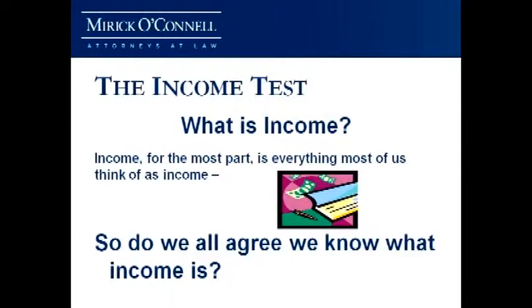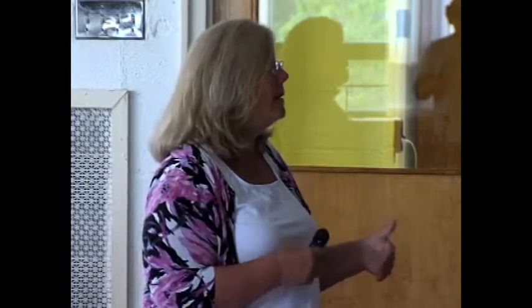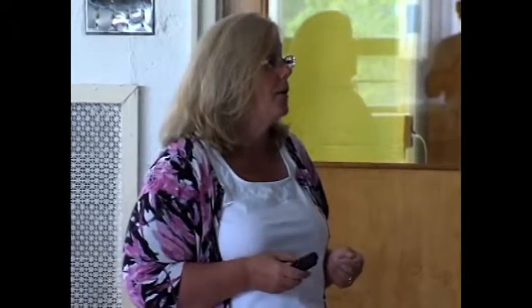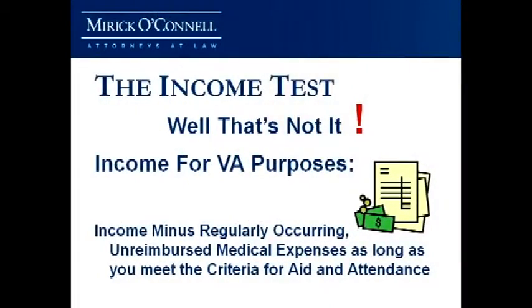We all agree we know what income is — social security, pensions, annuity income, interest, dividends, oil well royalties, rental income from your second home. Anything you can think of other than SSI, which is basically welfare payments, or VA compensation payments, is going to be considered for the income test. But that is not income for VA purposes. Income for VA purposes is everything we agree is income minus what you pay to the assisted living, as long as you meet those criteria we were talking about.